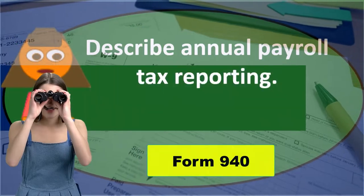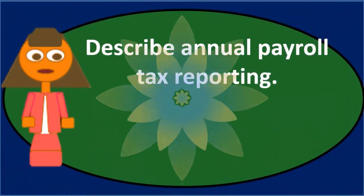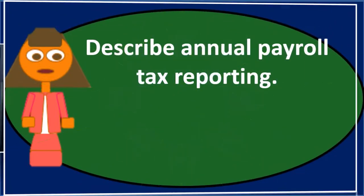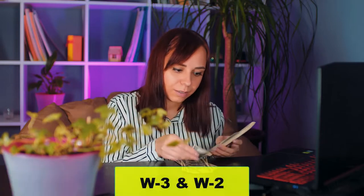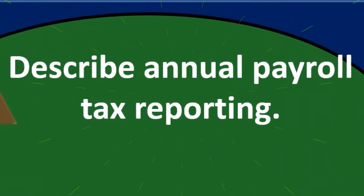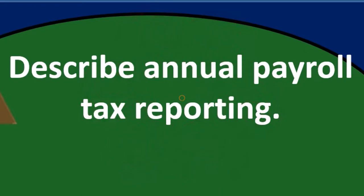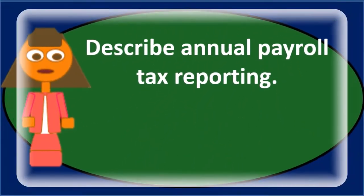It's important to keep in mind that Form 940 is typically the annual payroll tax report. We could also list other types of reports done at the end of the year, which would be the W-3 and W-2s. We want to keep those separate from the 941 — it's easy to get those mixed up. The 941s are reported quarterly, and Form 940 is the annual form.